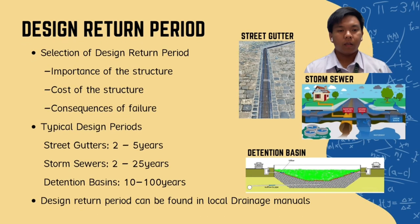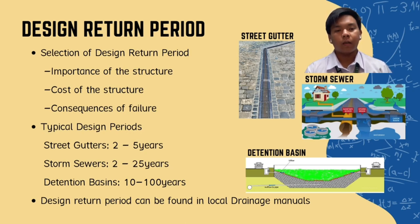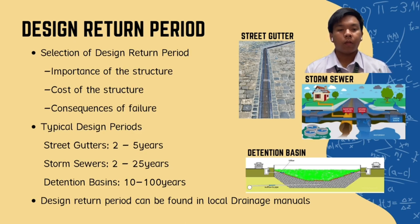In selecting the design return period, three important factors must be considered. First, the importance of the structure — what it is for and who or what it serves. Second, the cost of the structure, since resources are limited. Third, and probably most important, the consequences of failure — in the event the structure might fail, the consequences or damages should be kept minimal and not devastating for the surrounding area or people.